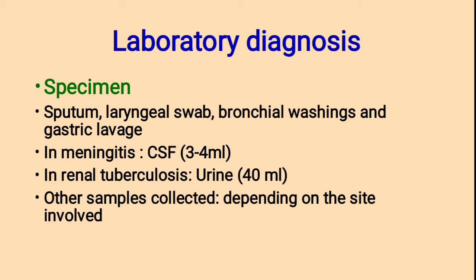Bronchial washings and gastric lavage. In the case of meningitis, we select cerebrospinal fluid — about 3 to 4 ml are collected. In the case of renal tuberculosis, we collect urine, about 40 ml. Other samples are collected depending on the site involved, which is very important for sample collection.